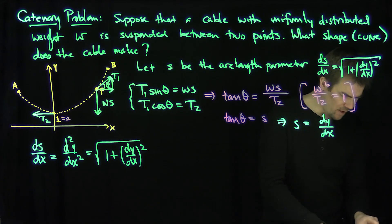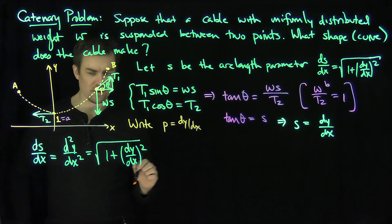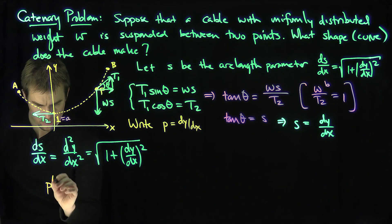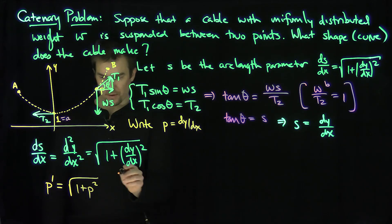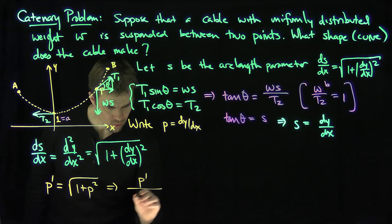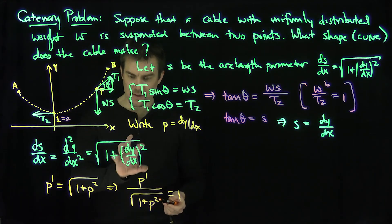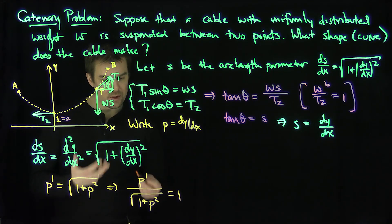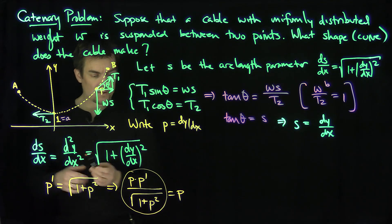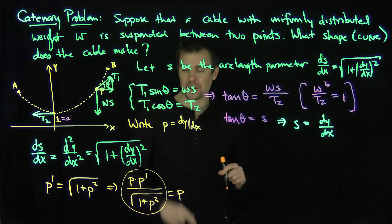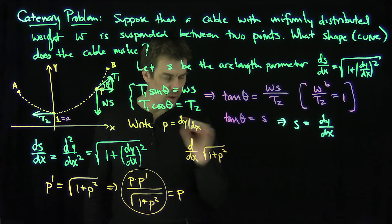As is standard, let me write P as dy/dx to save some writing. The differential equation becomes: P prime equals the square root of 1 plus P squared, or equivalently P prime over the square root of 1 plus P squared equals 1. Now I'm going to multiply both sides by P. This side becomes a perfect derivative — it is the derivative with respect to x of the square root of 1 plus P squared, which equals P.